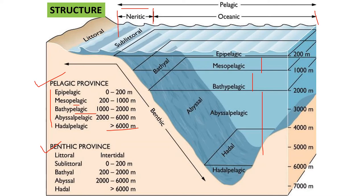The Benthic province is also divided into different sub-regions according to depth. First is the Littoral and Sub-littoral, which are present in the continental shelf region. After that, in the continental slope region, you can find the Bathyal-Benthic, which is beyond 200 to 2000 meters depth. The Abysal-Benthic is 2000 to 6000 meters depth, and beyond this the Hadal zone is called the Hadopelagic, beyond 6000 meters depth.